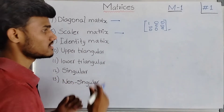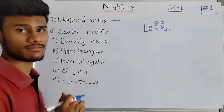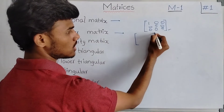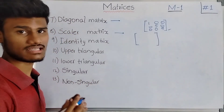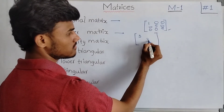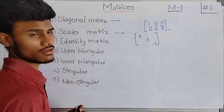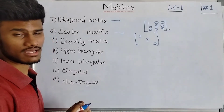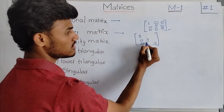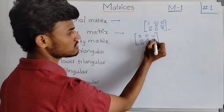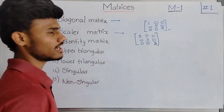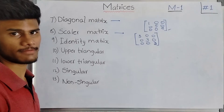Next, coming to scalar matrix. A scalar matrix is a square matrix and also a diagonal matrix in which all the diagonal elements are the same — that is, all diagonal elements are equal. For example, all diagonal elements are equal to 3, and all other elements are equal to 0. This type of matrix is called a scalar matrix.